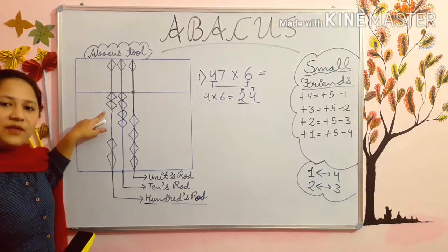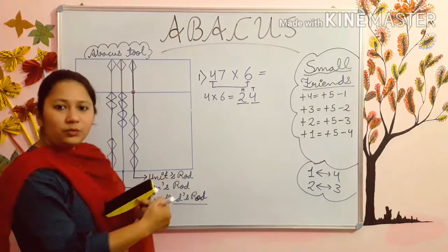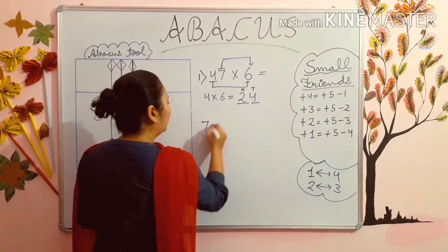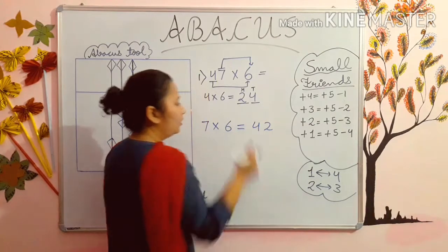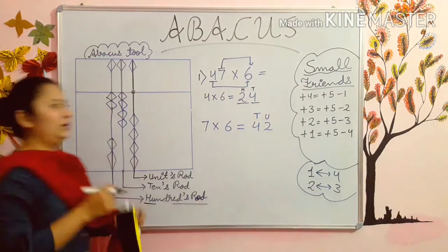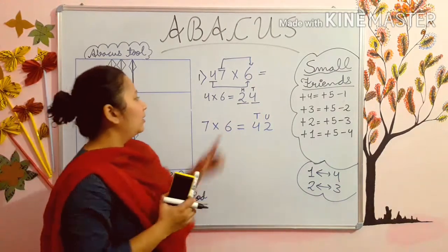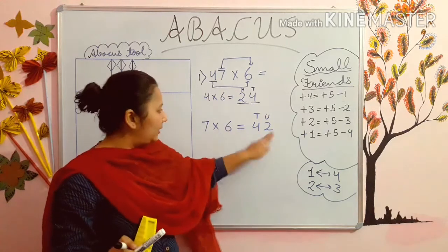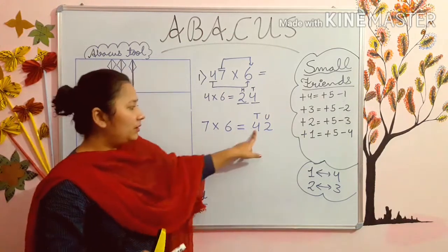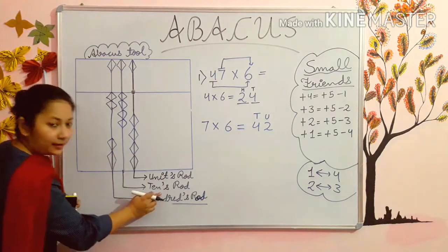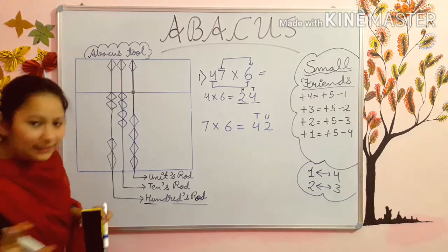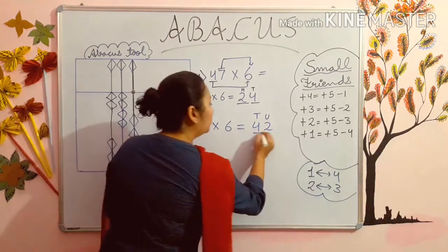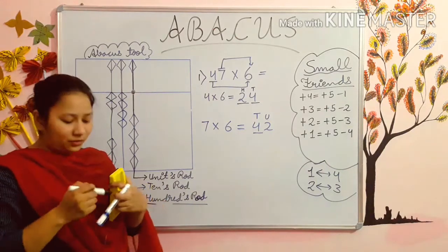In hundreds rod we have added 2, in tens rod we have added 4. Now you will multiply your next digit with 6. 7 sixes are 42. Now this digit will go in units rod and this digit will go in tens rod. As you can see, your first digit goes in hundreds rod, then second in tens rod, and in this the first will go in tens rod and the next will go in units rod. So 4 will go in tens rod — add 4 in tens rod. Tens rod is here and you have to add 4 here. Now you can see clearly that 4 is already added. So how will you add 4 again? This time you will use your small friends.